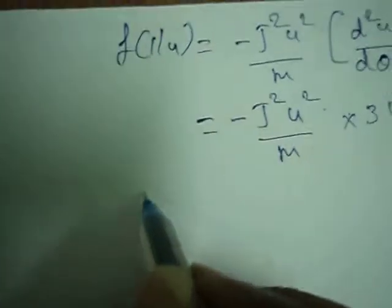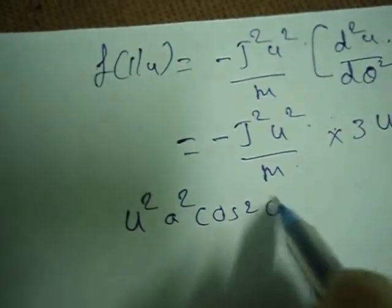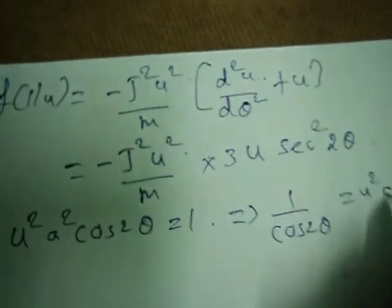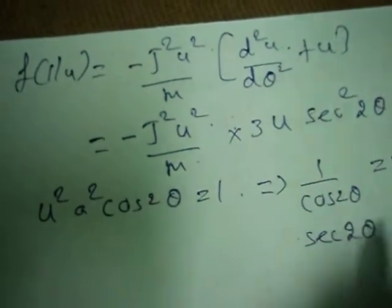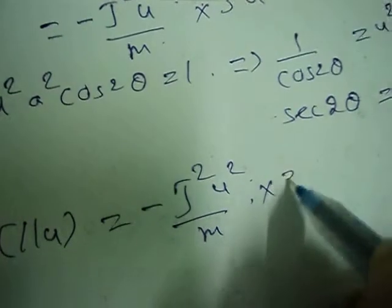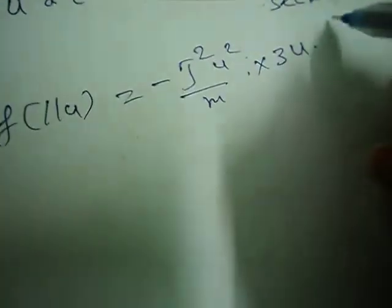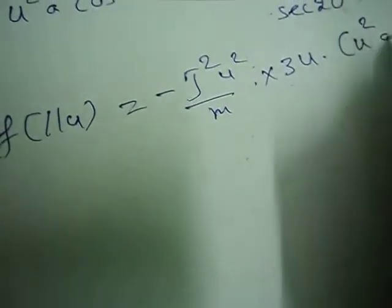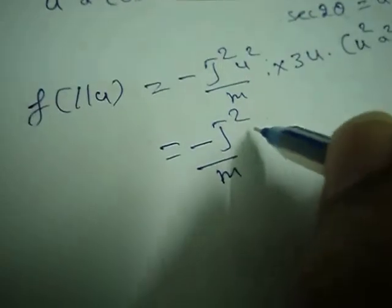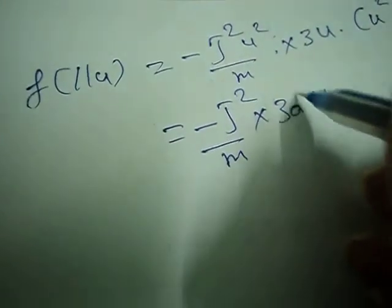From the earlier equation u²·a²·cos(2θ) = 1, we get 1/cos(2θ) = sec²(2θ) = u²a². Substituting, F(1/u) = −J²u²/m · 3u · (u²a²)² = −J²/m · 3a⁴·u⁷.